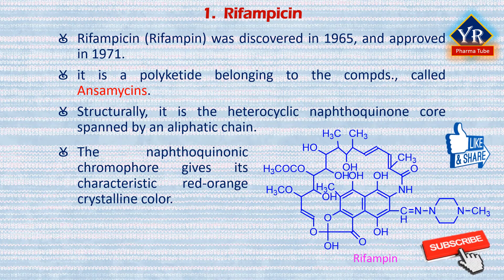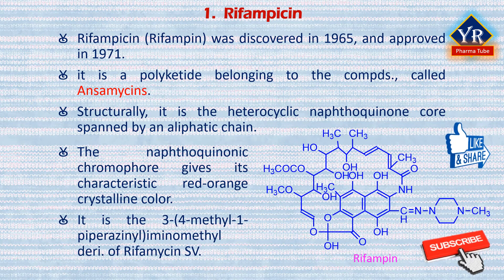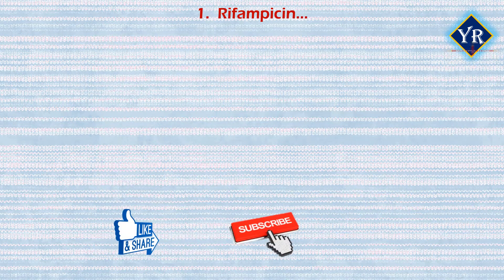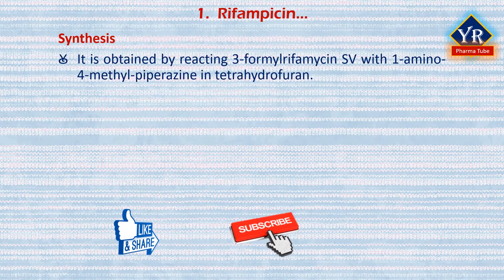The critical functional groups of rifampicin in its inhibitory binding of bacterial RNA polymerase are the four critical hydroxyl groups of the ansa bridge and the naphthal ring, which form hydrogen bonds with amino acid residues on the protein. Rifampicin is the 3,4-methyl-1-piperazinyl iminomethyl derivative of rifamycin-SV. It is synthesized by reacting 3-formyl rifamycin-SV with 1-amino-4-methyl-piperazine in tetrahydrofuran.